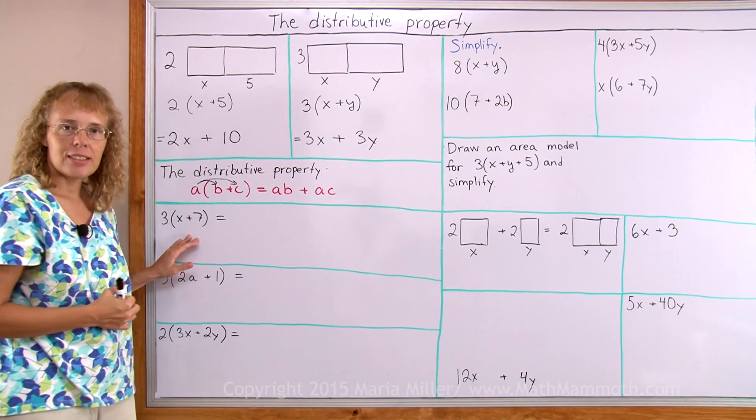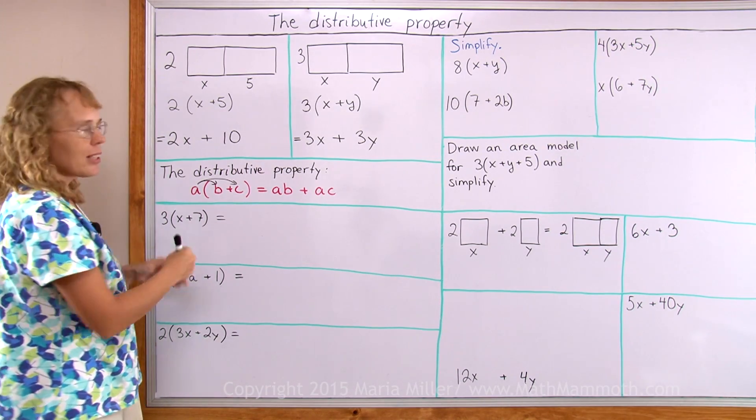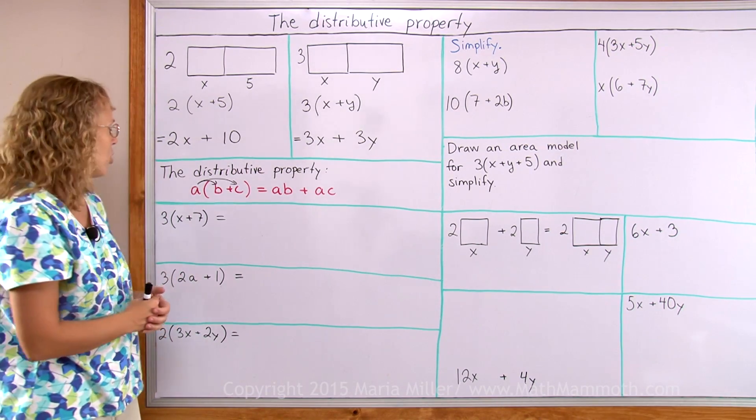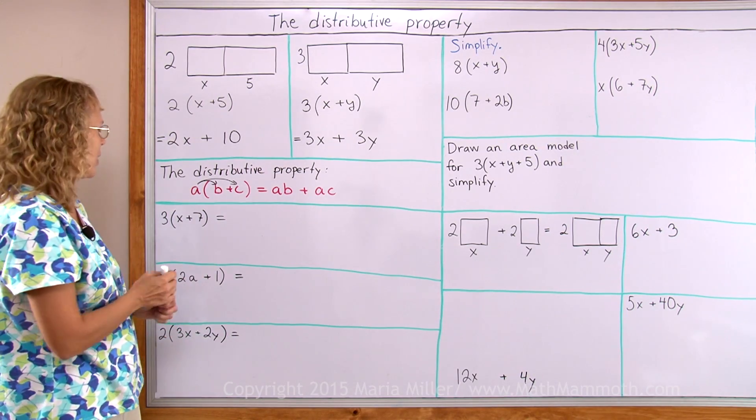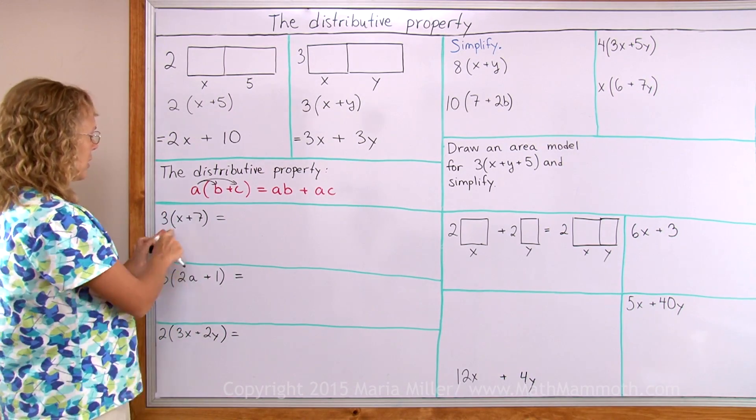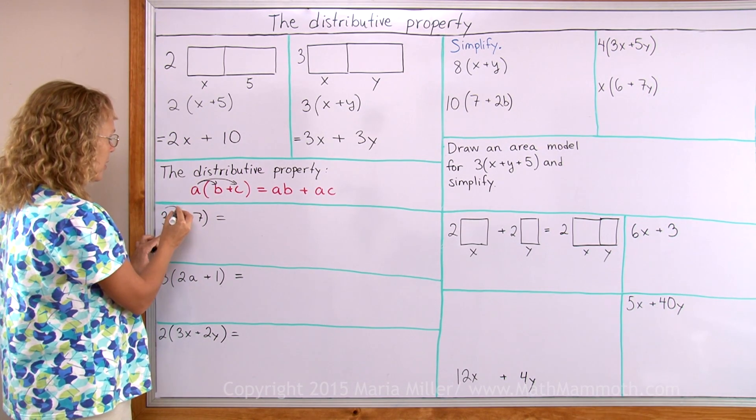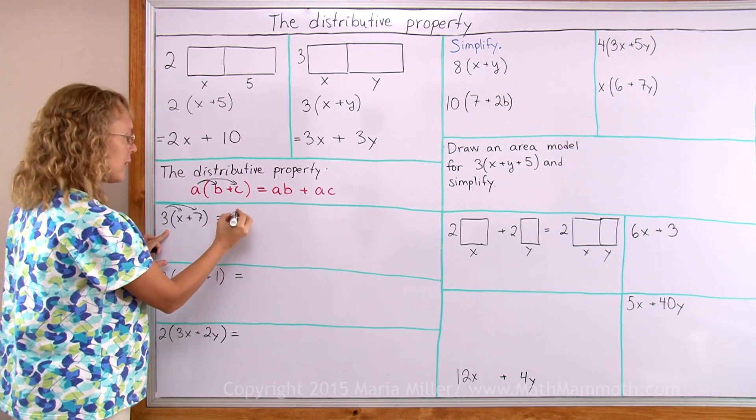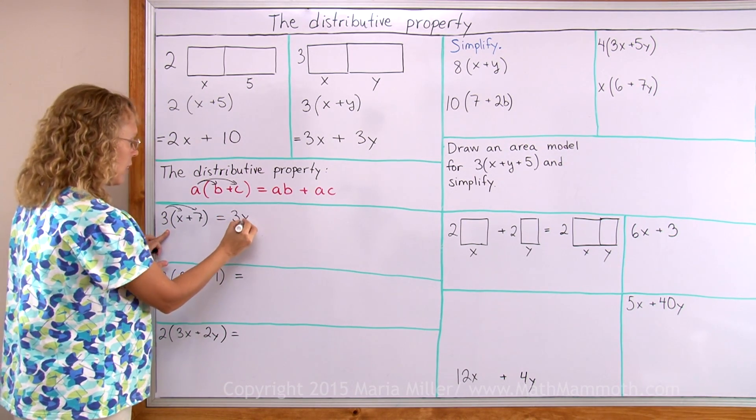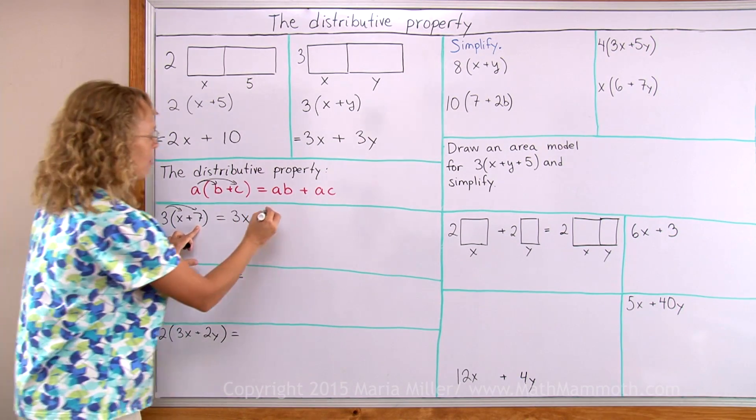Now let's apply this distributive property to this expression here. We are basically simplifying it or sometimes it is also called that you get rid of the parentheses. So this is exactly formed like here. I will then therefore go 3 times x and then 3 times 7. 3 times x is of course 3x. Then plus in between these two and then 3 times 7 which is 21.